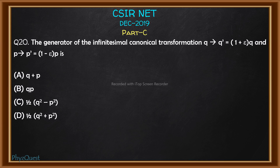Hello, welcome to FizzQuest. This is the solution video for CSIR NET December 2019 Part C, Question Number 20. The question asks for the generator of the infinitesimal canonical transformation where q goes to q prime equal to (1 + ε)q and p goes to p prime equal to (1 − ε)p. We need to find the generating function for that transformation.